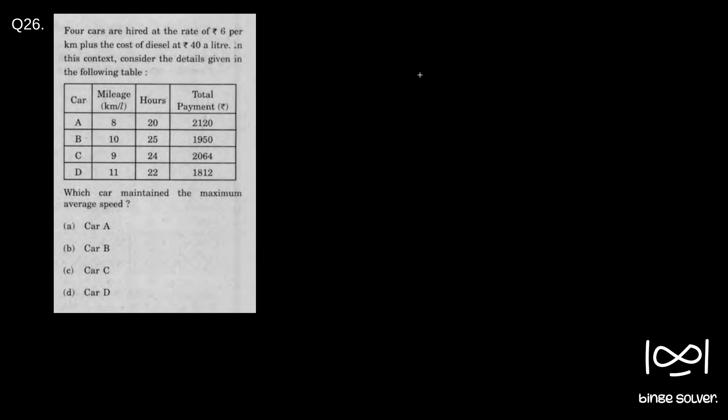Anyway, I'm going to solve this question with minimum steps possible. Here total payment is given. Total payment is equal to speed into time. Since we need to find speed, the time is given which is hours. If you multiply speed into time you get the total distance traveled by that car. So that total distance into six per kilometer, plus speed into time which is total distance by mileage. Total distance by mileage is total liters of diesel consumed, and for a liter it is 40 rupees. So total liters consumed into 40 becomes the total payment.